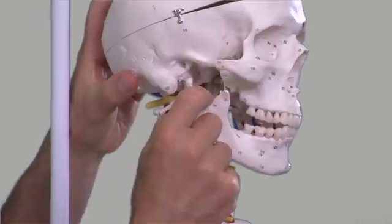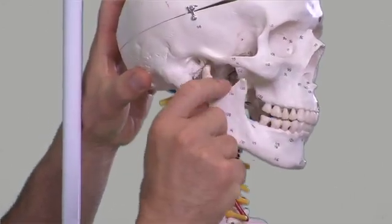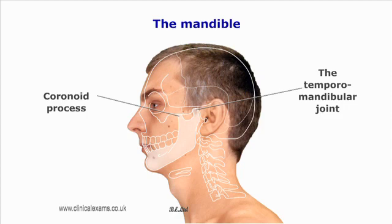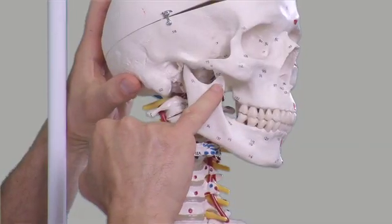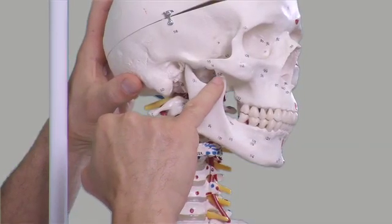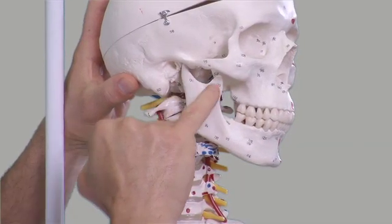The condyles form the articular surfaces with the temporal bone. The coronoid process of the mandible is located anterior to the condyles; they are pointed projections that provide attachments for the temporalis muscle. All the components can be palpated, but the condyles and coronoid process are only accessible when the mandible is fully depressed.